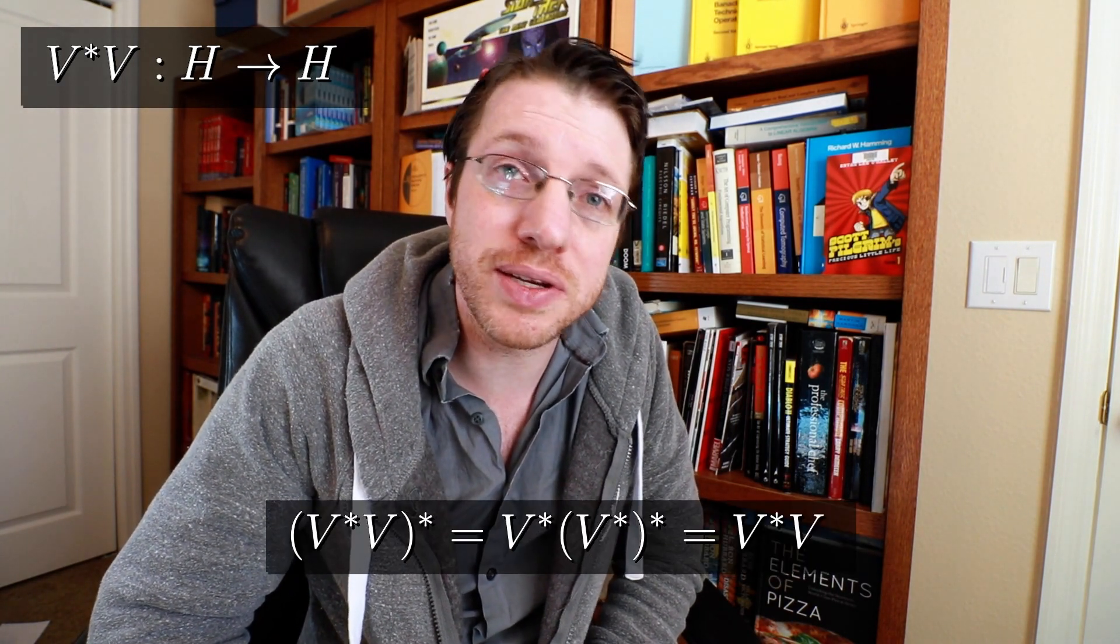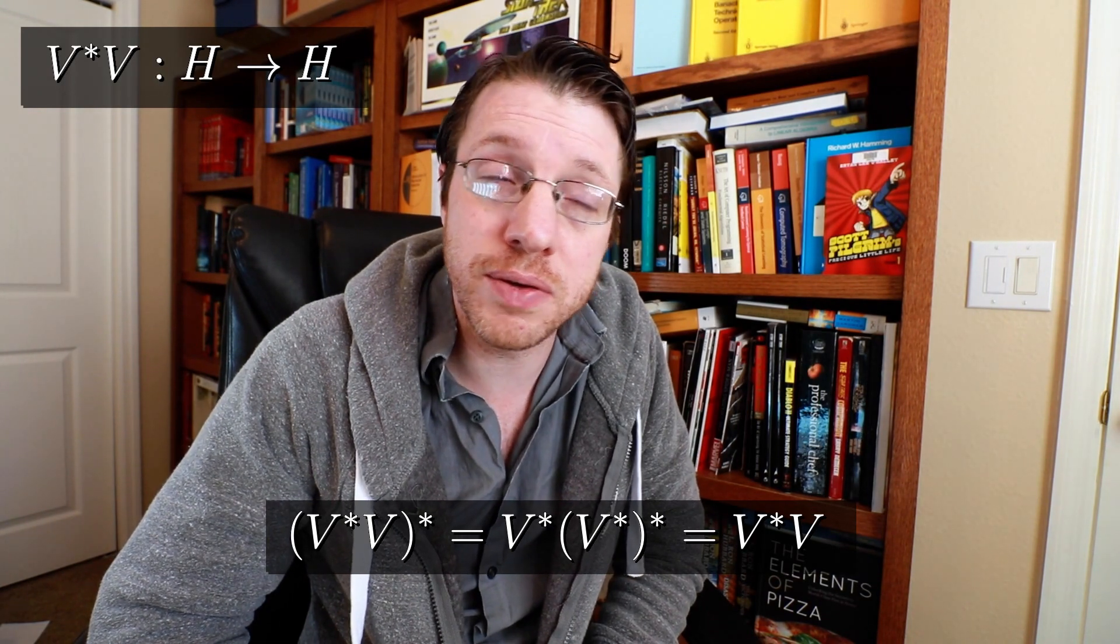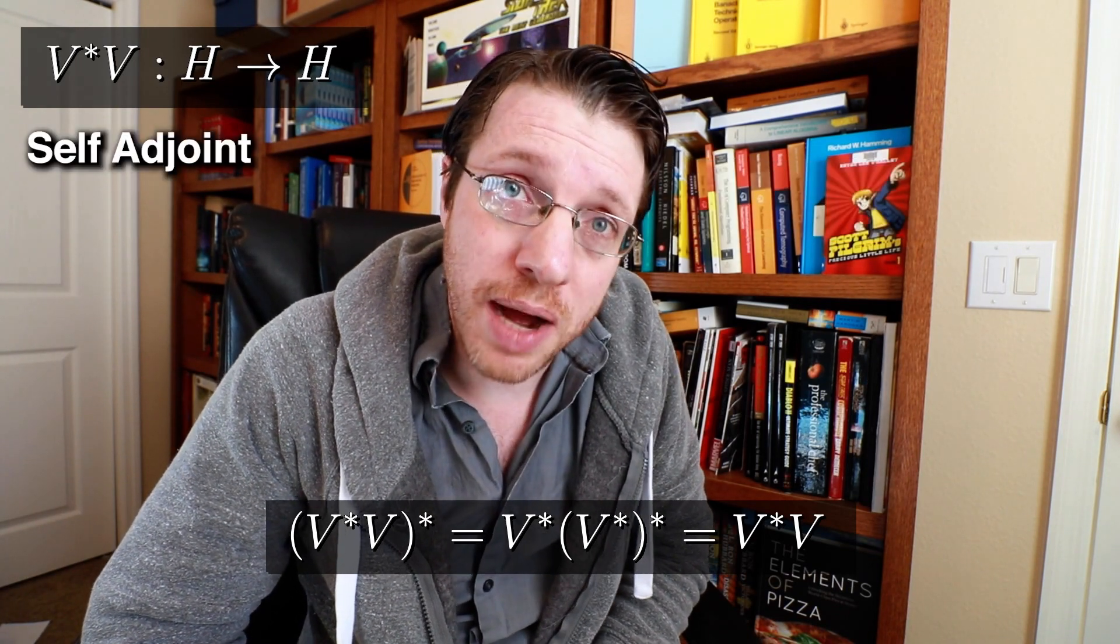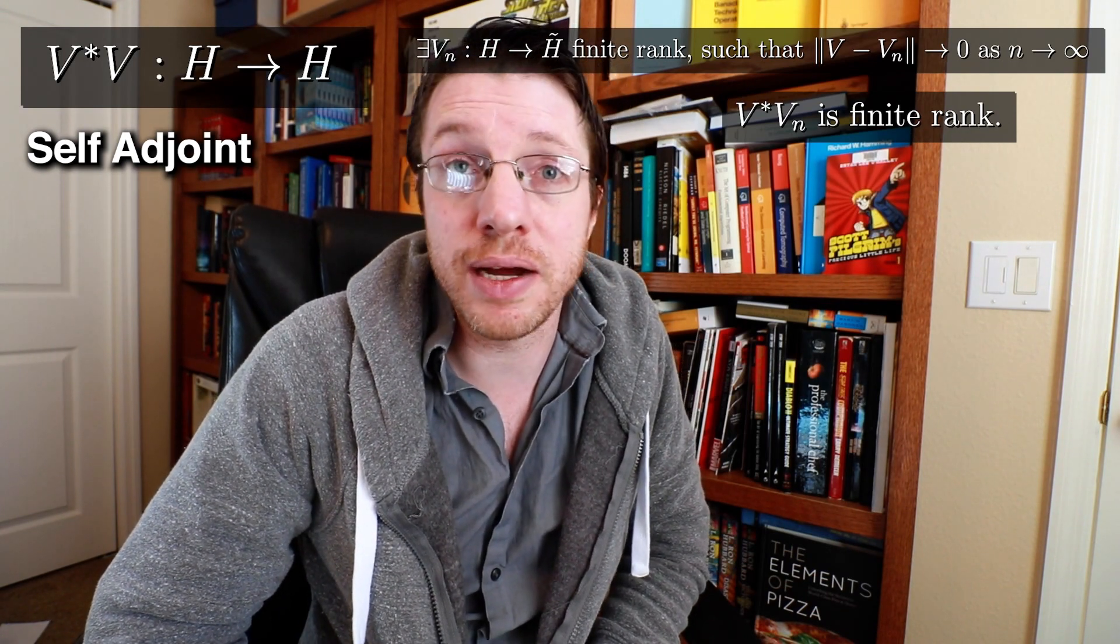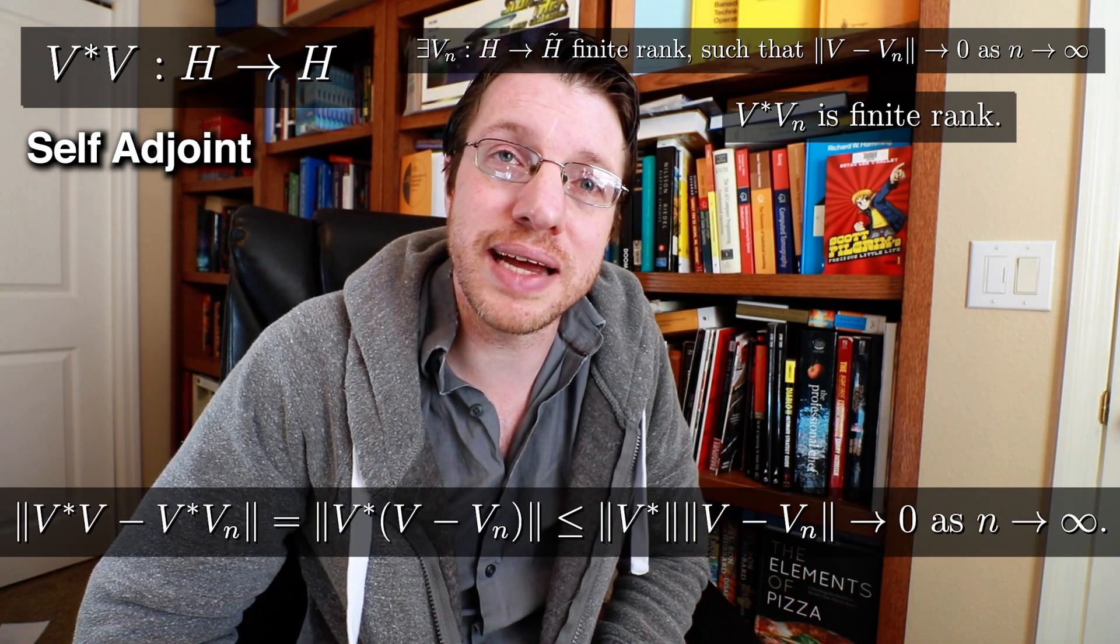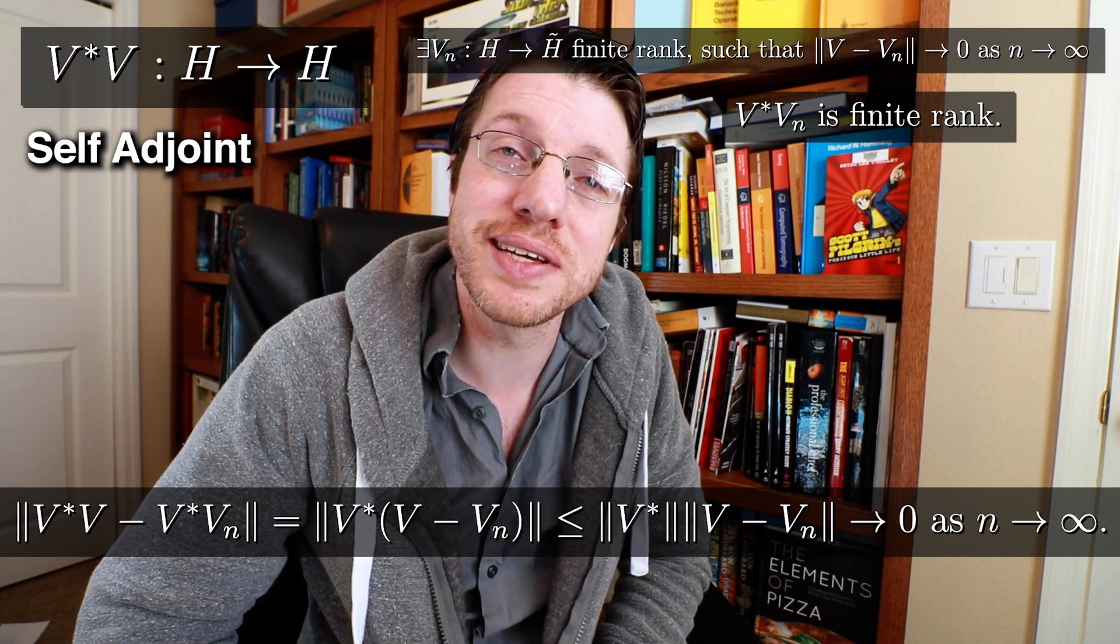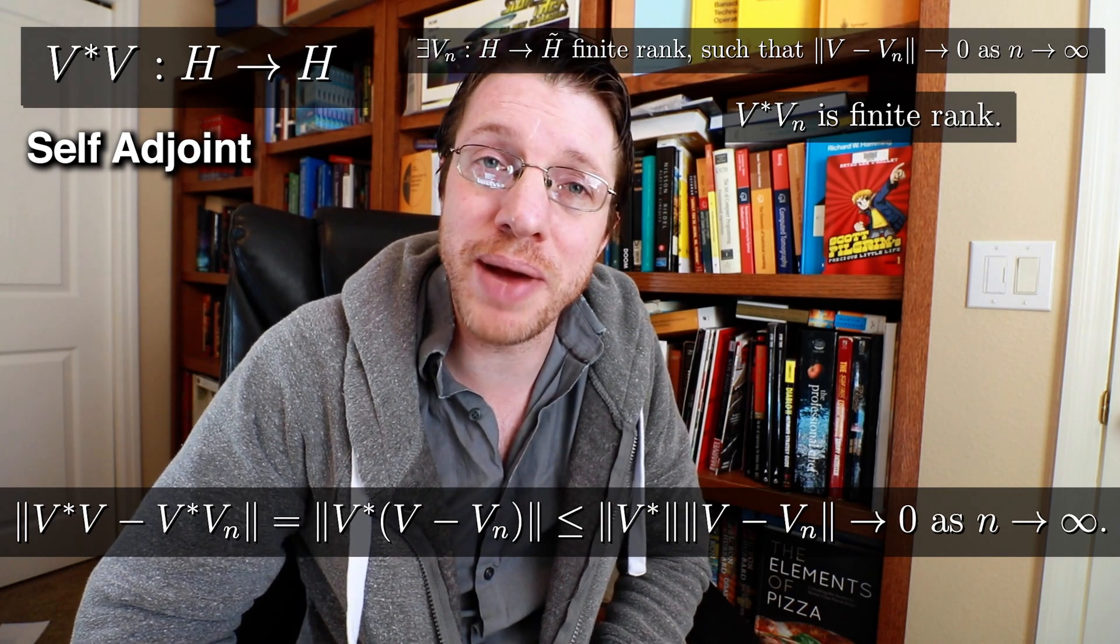Because if you take the adjoint of V adjoint times V, then you just exchange the order and then V adjoint adjointed is just V again. So that shows us that this is actually a self-adjoint operator, but it's also a compact operator. Take the inner compact operator and then just show that you can get a finite rank approximation of that V star against that finite rank approximation is actually a finite rank operator itself. So then you can show that you can get a finite rank approximation of this in the norm topology. So that means it is actually compact.